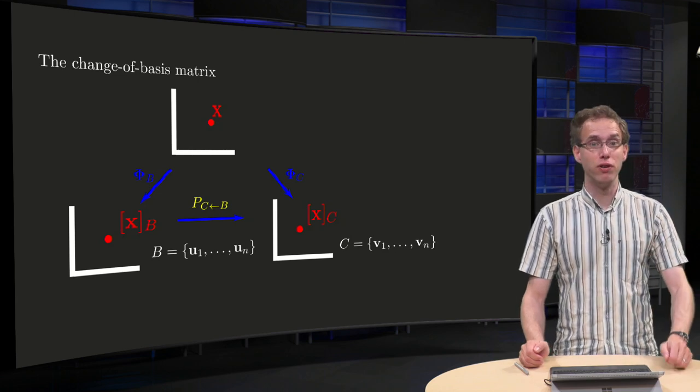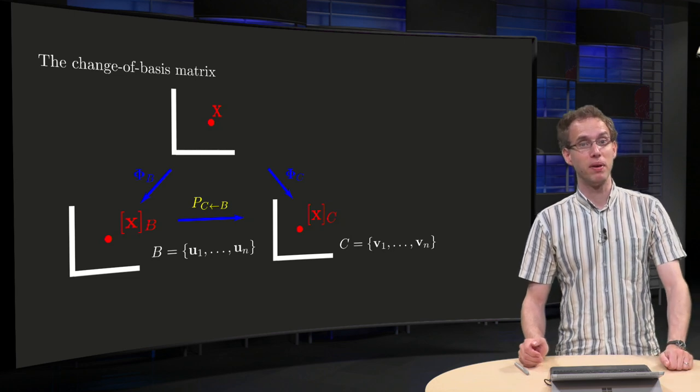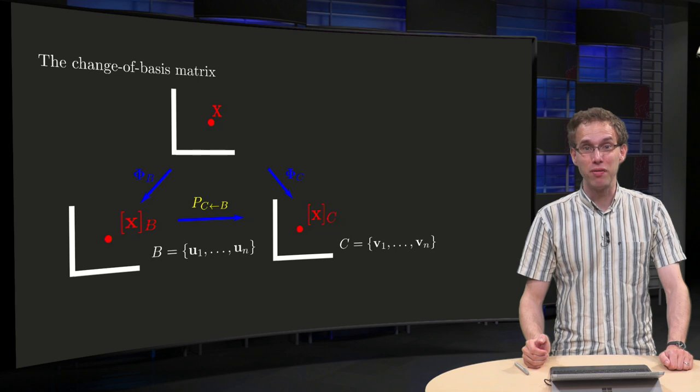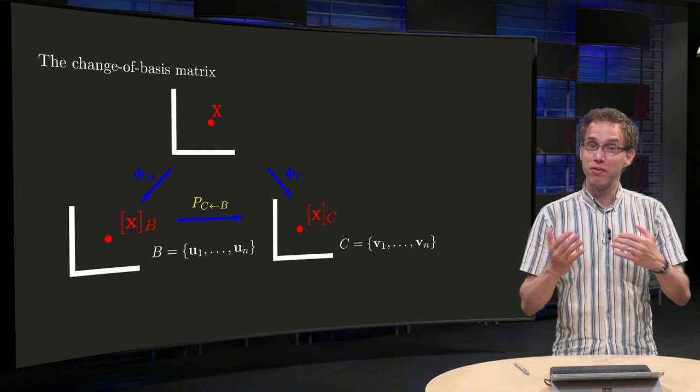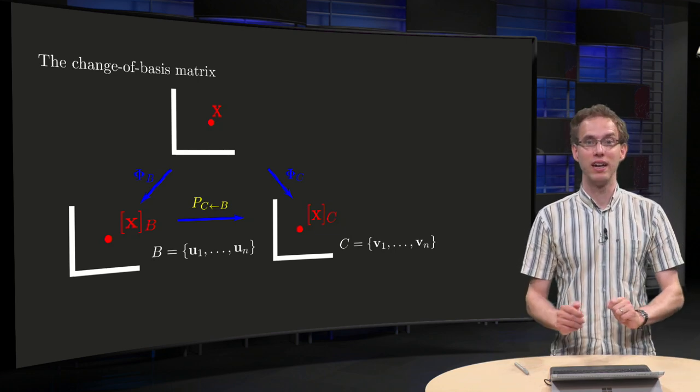But such a conversion is a composition of two coordinate mappings, so a composition of two linear mappings, which means that this composition is a linear mapping itself and thus implemented by some matrix. But how can we find this matrix that allows us to convert coordinate vectors? That is what you will learn in this video.